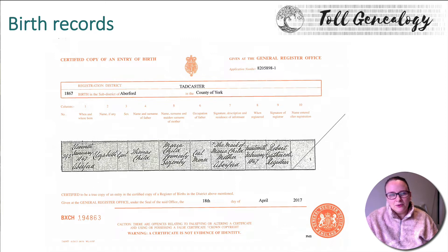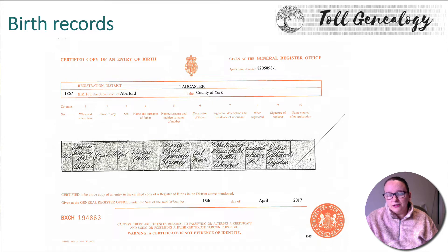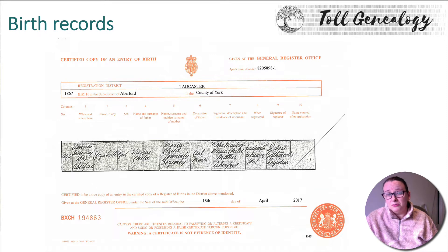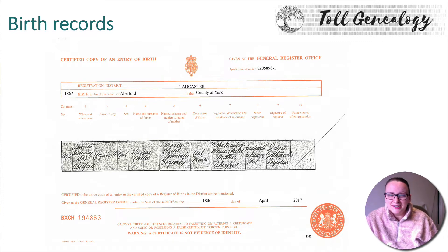Here's an example of a birth record. This is my ancestor Elizabeth Child. Her birth certificate gives the name of her father Thomas Child and her mother Mary Child, formerly Lazenby — so her maiden name was Lazenby before she married Thomas. It also gives Thomas's occupation as coal miner, and it tells you where they were living at the time. This is an early record from a small area in Yorkshire, so it notes that Mary registered the birth of her own child and that she lived in Aberford, where Elizabeth was born on the 11th of January 1867.